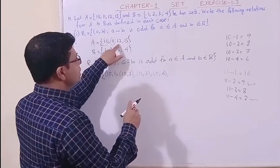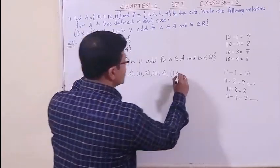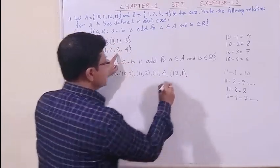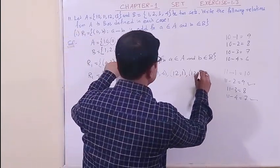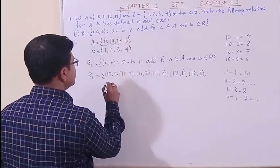12 is again an even number. So even minus odd. 12 minus 1, 12 minus 3. The pairs are (12, 1) and (12, 3).